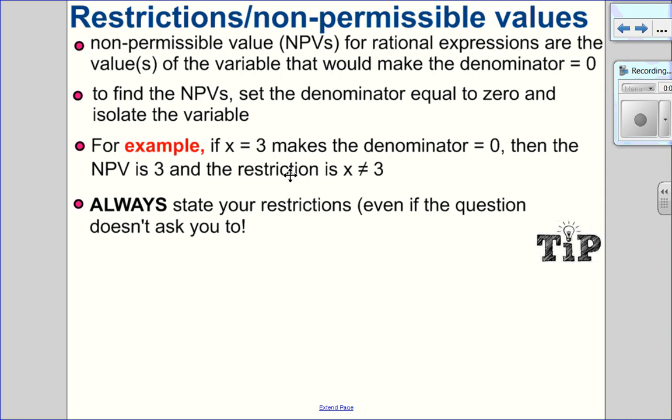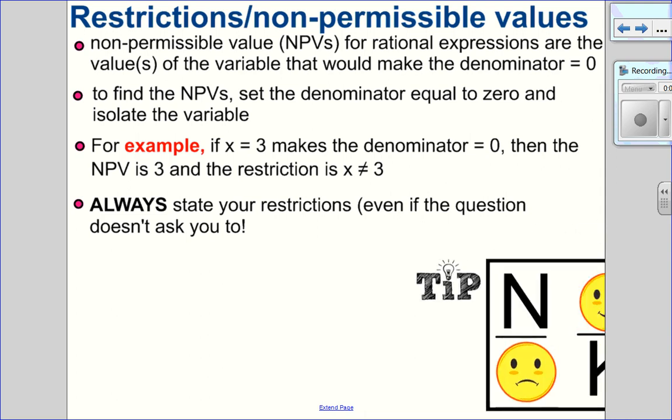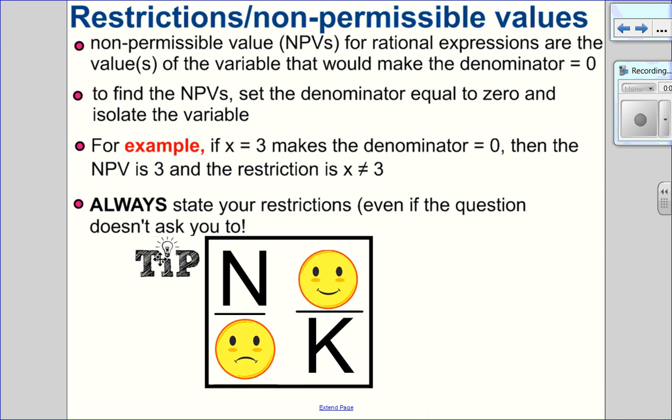Every question where the variable is in the denominator, you must always look for non-permissible values and state your restrictions, even if the question doesn't ask you to. Remember, a 0 in the denominator is a big no, but a 0 in the numerator is okay.